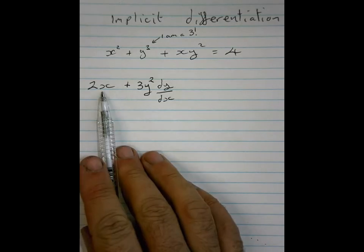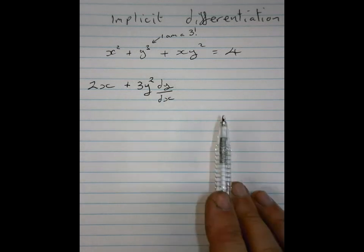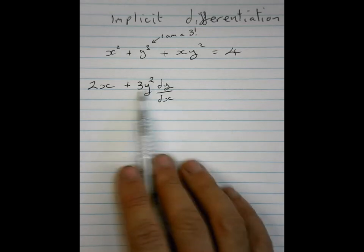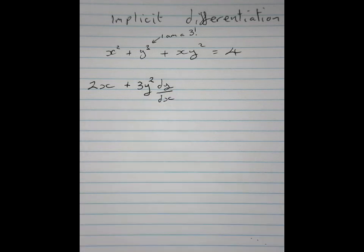So whenever you differentiate x with respect to x, you just do it. Whenever you differentiate y with respect to x, you just differentiate it like normal and put dy by dx after it. So that's all you've got to do. There's a sneaky trick coming.